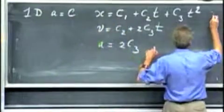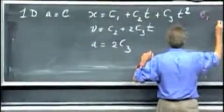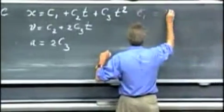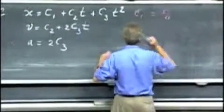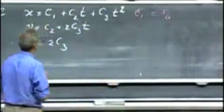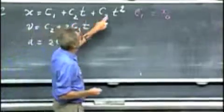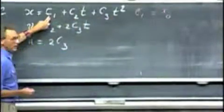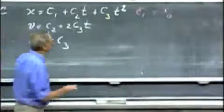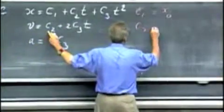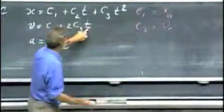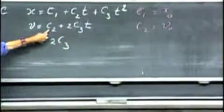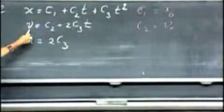Clearly, c1 is the position of x at time t equals zero, for which we often write an x0, because when t is zero, that is where x is. c2 is really the velocity at time t equals zero, because when t is zero, that's when c2 is v.